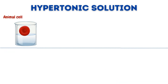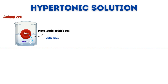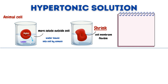When an animal cell is placed in a hypertonic solution, where the solute concentration outside the cell is higher than inside, water leaves the cell from higher to lower concentration, causing the cell to shrink. In animal cells, the cell membrane is flexible but not as rigid as a plant cell wall. As a result, the cell can shrink and become distorted as it loses water. This process is known as crenation.